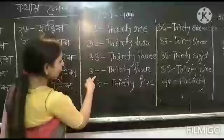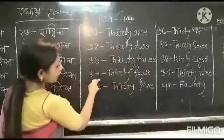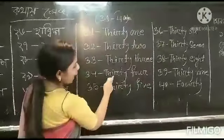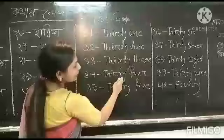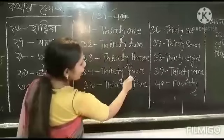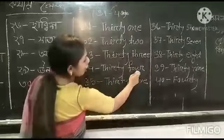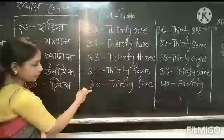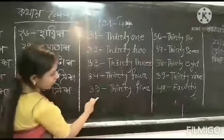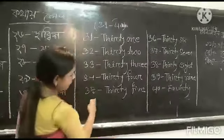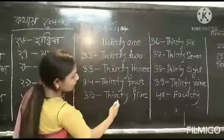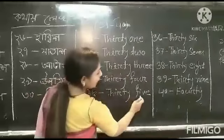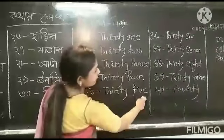E termo letter 34. 34. Bananas are letter T, H, I, R, T, Y. 34. S, O, U, R. 34. E termo 35. 35. E, H, I, R, T, Y. 35. S, I, V, E. 35.